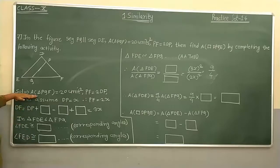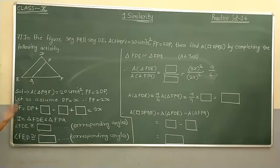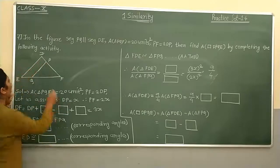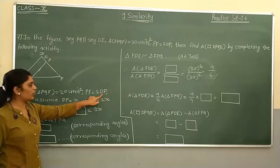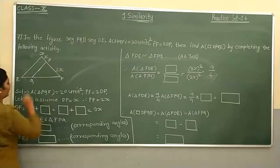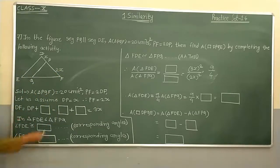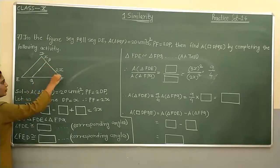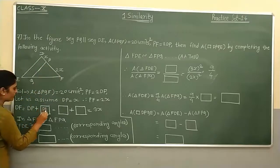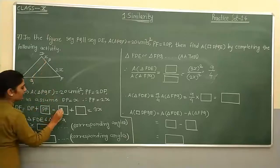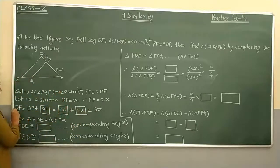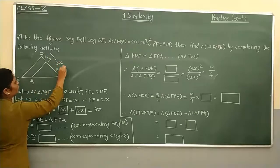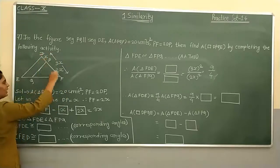Given: area of triangle PQF equals 20 unit square, and PF equals 2DP. Let DP equal X. Then PF equals 2X. DF equals DP plus PF equals X plus 2X equals 3X. So DF is 3X.